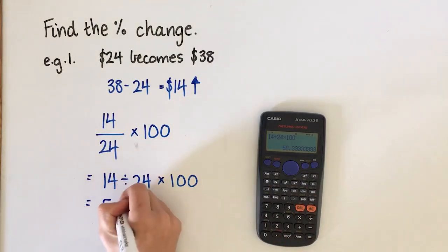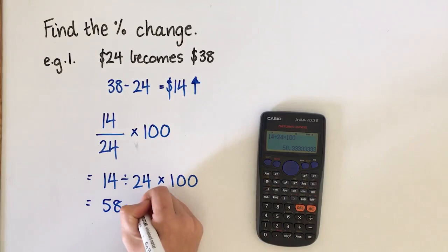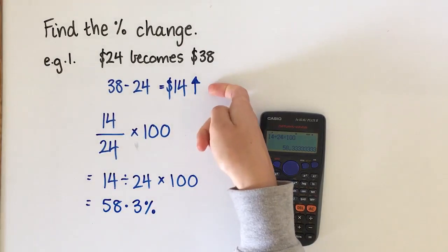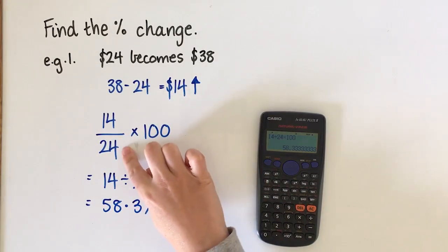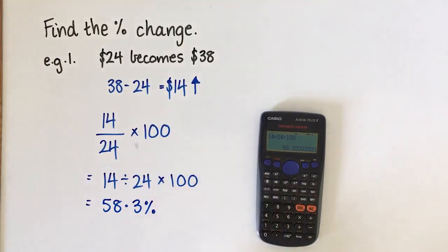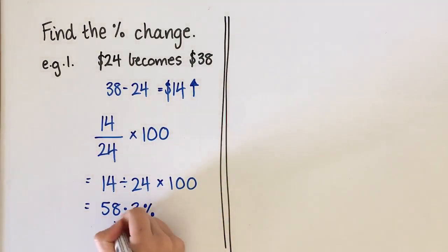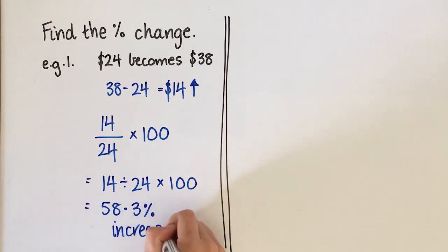That's going to be 58.3% if we round it. So find the change, write it as a fraction of the starting value, type in the calculator and you'll get your percentage. And I should say that this is actually a percentage increase. It's important to note whether it's an increase or a decrease.